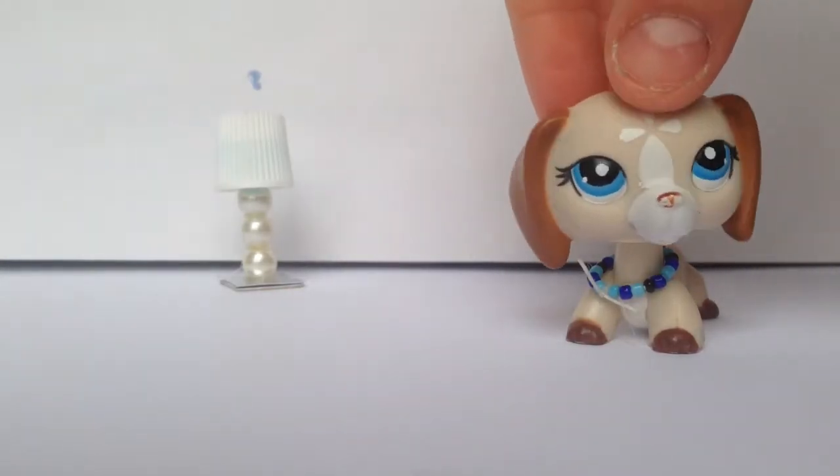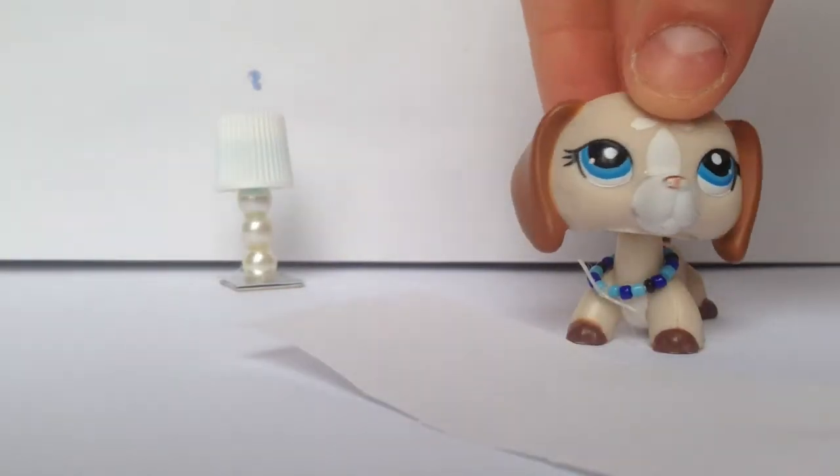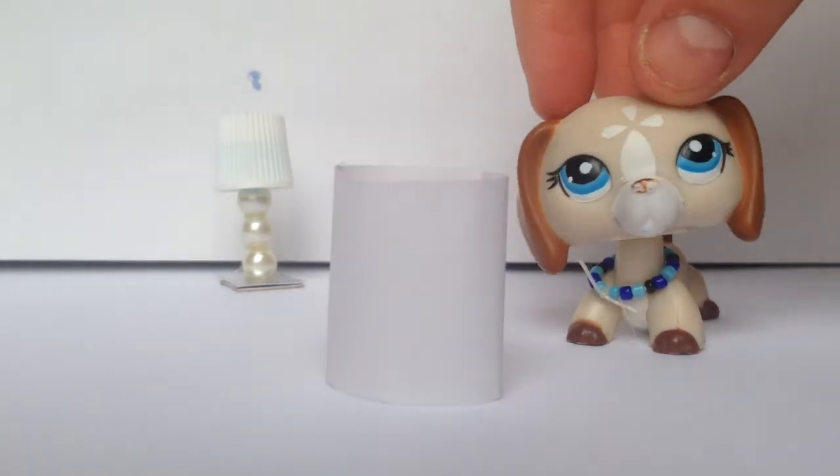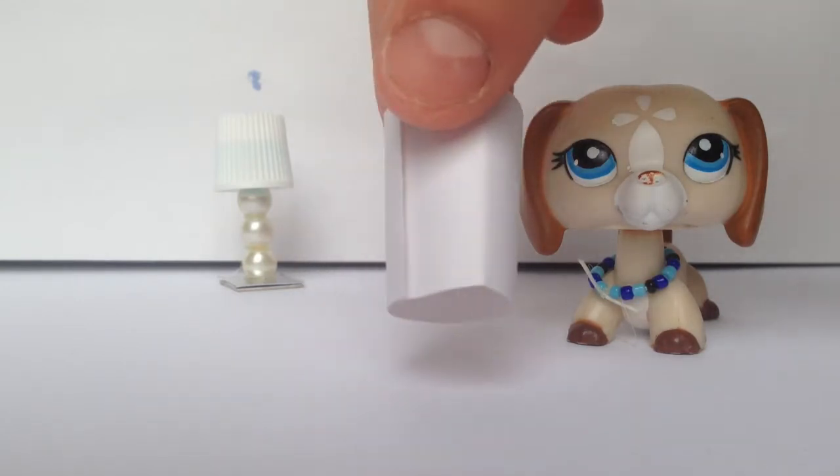The first thing you're going to do is get a strip of paper and then roll it up until you get a lampshade like this. Once you get a shape like this, just glue it at the back like I have already done, and that will be your lampshade.